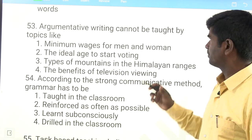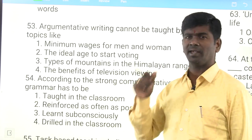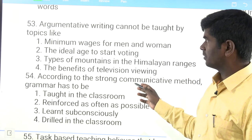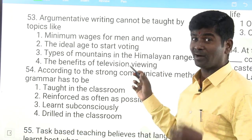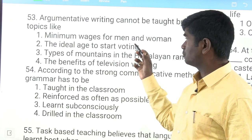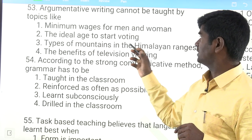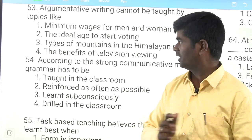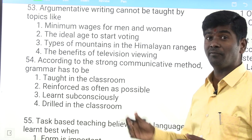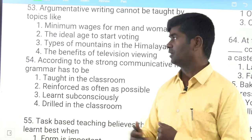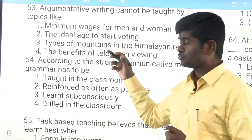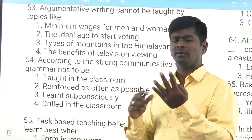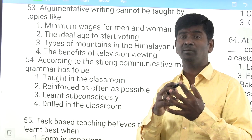Argumentative writing cannot be taught by topics like 'Types of mountains in the Himalayan range' — that is descriptive, not argumentative. The other options — minimum wages for men and women, the ideal age to start voting, and the benefits of television viewing — are all argumentative topics. Writing can be categorized broadly into four types: descriptive, narrative, argumentative, and persuasive. The answer is option 3 — types of mountains — which is not argumentative.